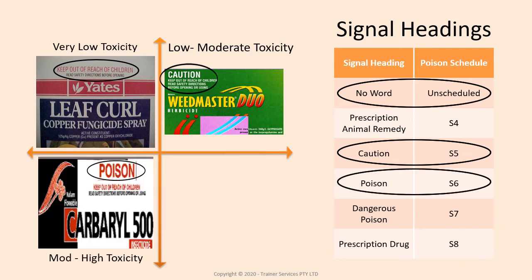If the first word is 'poison', then the concentrated chemical is a schedule 6 poison and is in the high toxicity bracket. However, many household chemicals are also still in this category, including bleach.